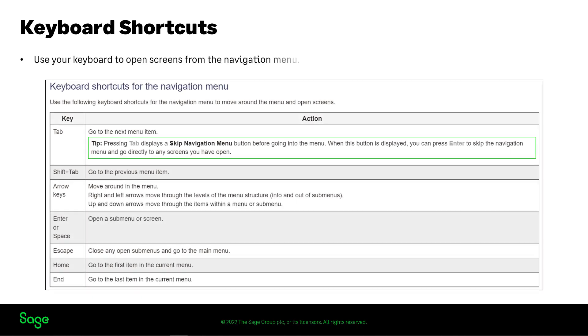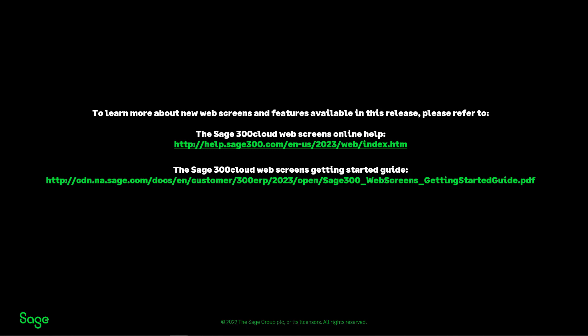You can now use your keyboard to open screens from the Navigation Menu. New keyboard shortcuts for the Navigation Menu let you move around the menu and open screens from it. More information on web screens can be found on the Sage 300 Cloud Web Screens Online Help page or in the Sage 300 Cloud Web Screens Getting Started Guide.